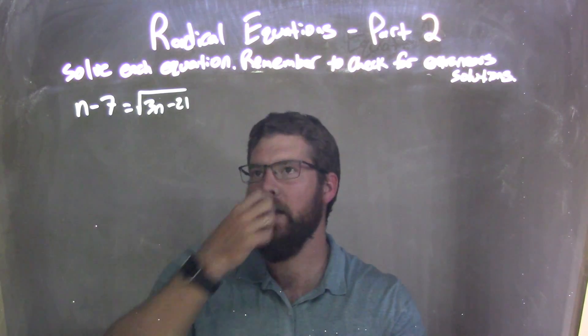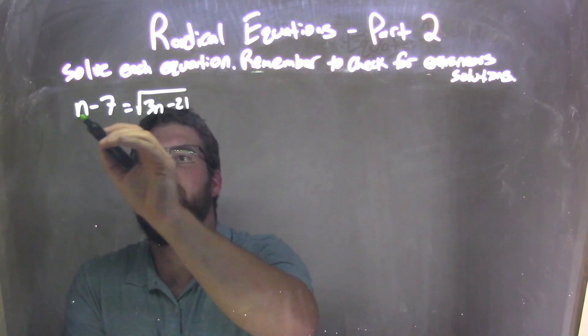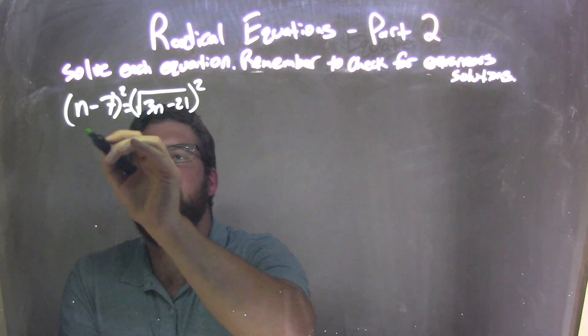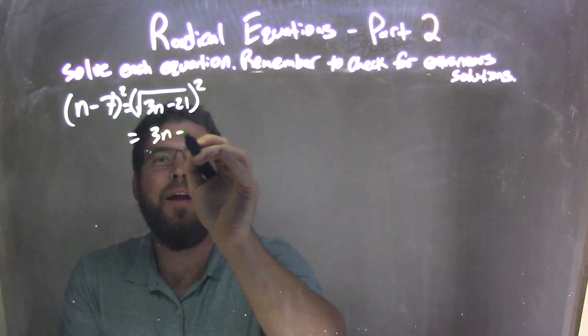Well, first thing I need to do is I need to square both sides to eliminate that radical. So I'm going to square both sides here, leaving me with, on the right side, 3n minus 21.